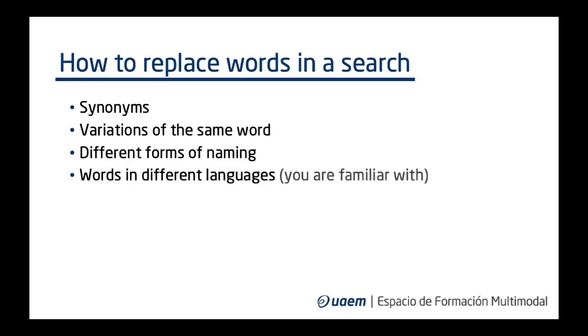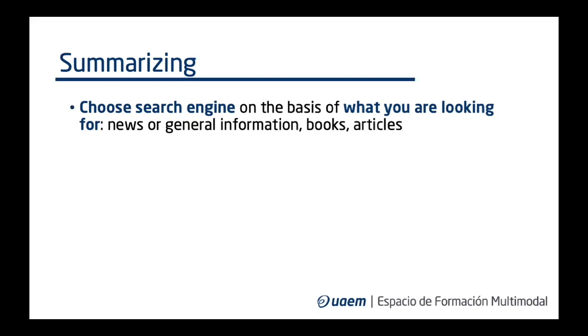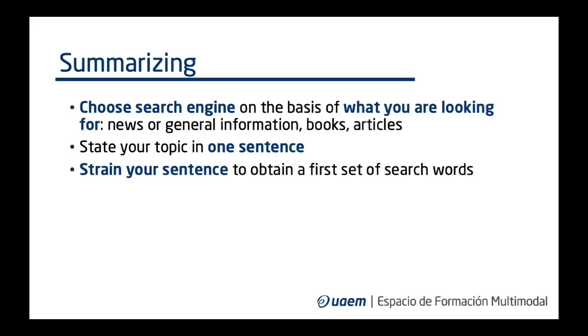This short story is just to emphasize the importance of naming — of selecting the correct words to name. To summarize and finish this short webinar, we will go again through the steps we explored. First, choose the right search engine on the basis of what you are looking for. Remember that trustworthy sources are, in general, news, books, and articles. State your research topic in one sentence — phrase it as a question, a hypothesis, or a problem. It is the best way to identify how you are focusing your topic. Strain your sentence, taking away all the unnecessary words to obtain a first set of search terms.